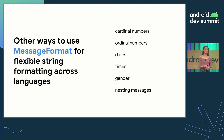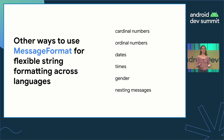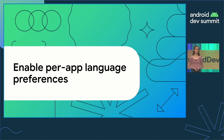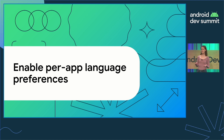MessageFormat is really robust — it can be used for flexible string formatting across languages. Consider it for ordinal numbers, dates, times, gender, and nesting complex message strings. After you've localized and internationalized your app using those tips, you can take advantage of a new feature called Per-App Language Preferences. Before we talk about what this feature is, we'll talk about why it's important by exploring two user journeys.